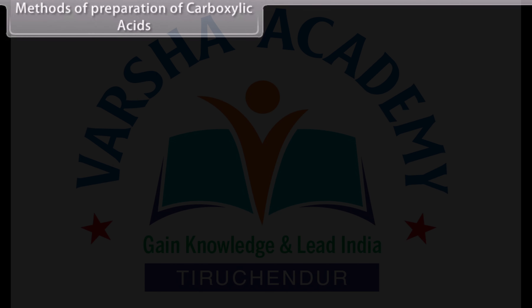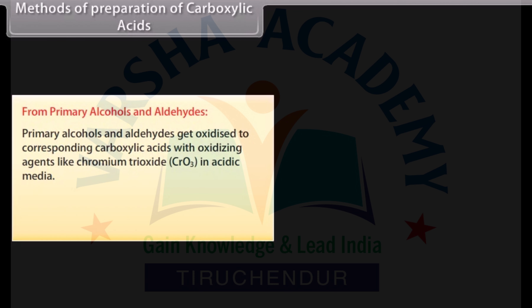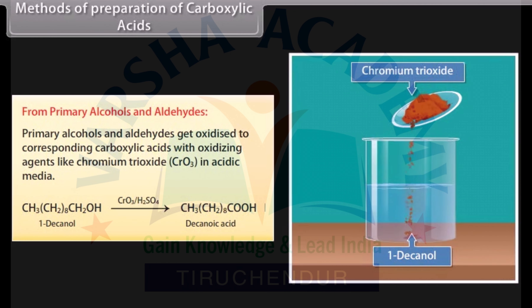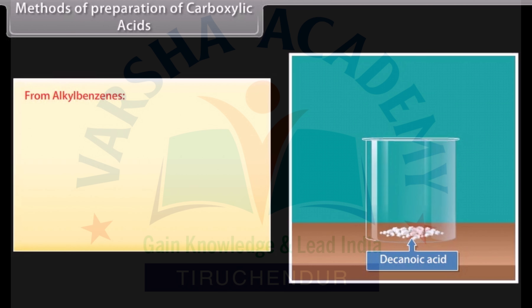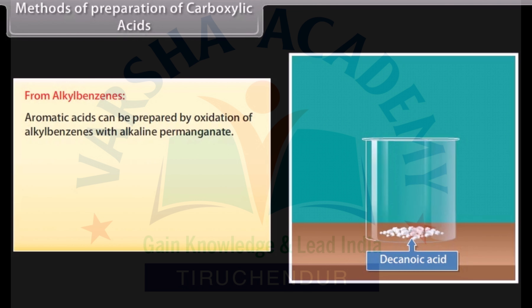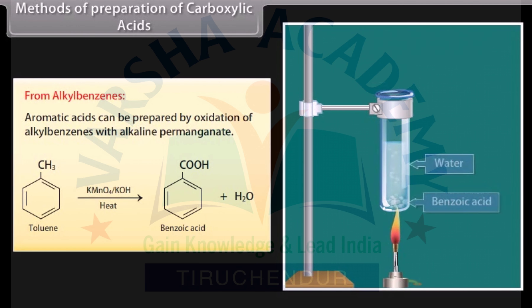Methods of preparation of carboxylic acids — from primary alcohols and aldehydes: primary alcohols and aldehydes get oxidized to corresponding carboxylic acids with oxidizing agents like chromium trioxide in acidic media. 1-decanol reacts with chromium trioxide in acidic medium to form decanoic acid. From alkyl benzenes: aromatic acids can be prepared by oxidation of alkyl benzenes with alkaline permanganate. Toluene reacts with potassium permanganate in alkaline medium to form benzoic acid.